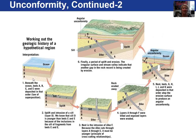Sediment generally gets deposited when water is covering an area, such as this ocean here. Going to the second picture, we have the ocean gone, exposing rock layer E to erosion. Erosion of the land occurs when it's not covered by water in general.